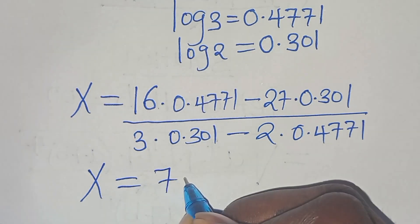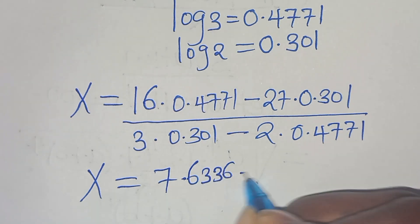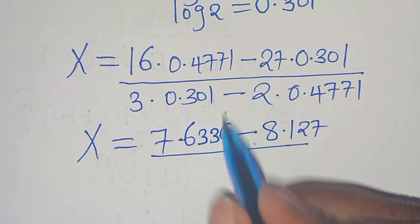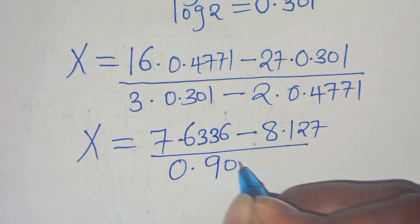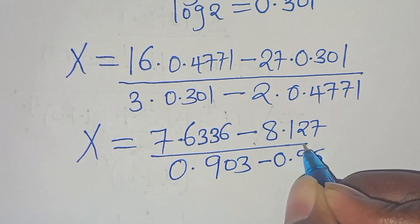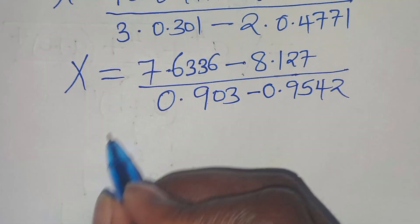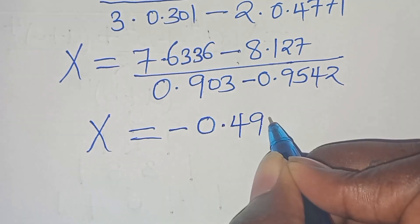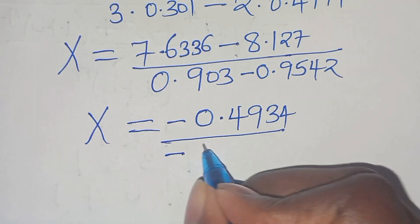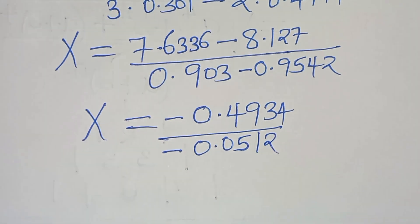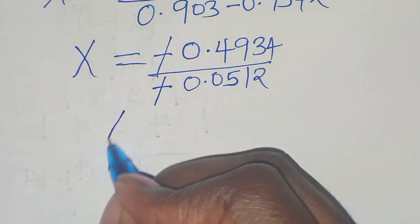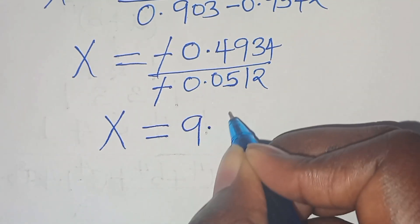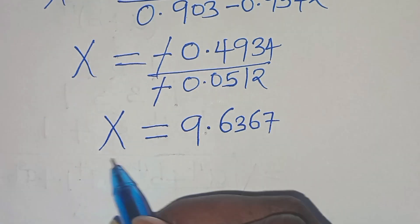Computing: 16 times 0.4771 is 7.6336, minus 27 times 0.301 which is 8.127, giving a numerator of minus 0.4934. The denominator is 3 times 0.301 which is 0.903, minus 2 times 0.4771 which is 0.9542, giving minus 0.0512. Dividing minus 0.4934 by minus 0.0512, x equals approximately 9.6367.